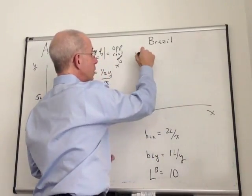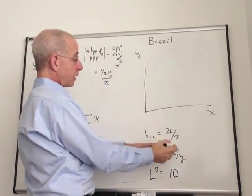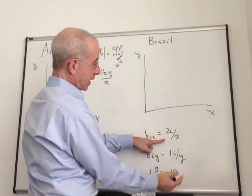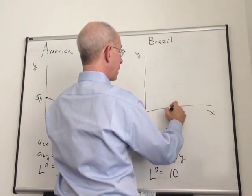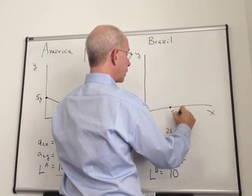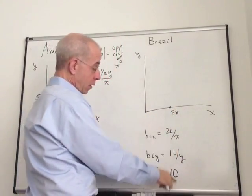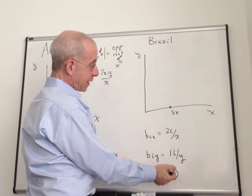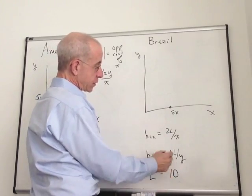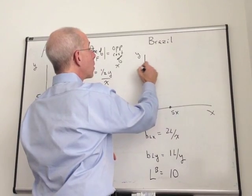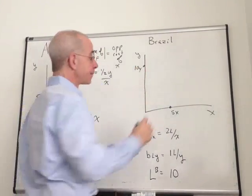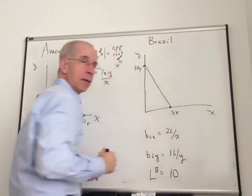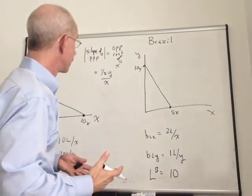If we do the same thing for the Brazilians, we're going to get a similar relationship. If we take a look at how much the Brazilians can produce with their 10 resources, they'll be able to get 5 units of X if they devote all 10 units to the production of X, because it takes 2 workers for every X. If they devote all their resources to the production of Y, we get 10Y. And once again, we have a linear production possibility frontier.